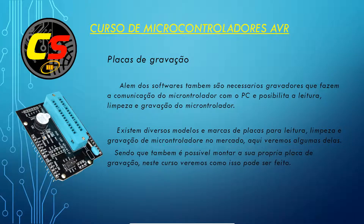Além do software de programação, a gente precisa de uma coisa chamada placa de gravação. O que a placa de gravação faz? Ela faz a comunicação do microcontrolador com o computador. Você cria o código, gera o arquivo HEX, e para que o microcontrolador entenda e receba esse arquivo é preciso uma placa de gravação fazendo a comunicação entre o microcontrolador e o computador. Existem diversos tipos de modelos de placas de gravação. A própria placa do Arduino já vem com um conversor USB-serial que faz essa comunicação. A gente vai ver alguns modelos existentes e também vai montar o nosso próprio para fazer essa gravação.